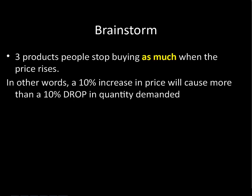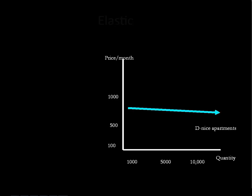Let's move on to the other type of demand. Brainstorm three products where people stop buying as much when the price rises — in other words, a 10% increase in price will cause more than a 10% drop in quantity demanded. Things like chicken, beef, Coca-Cola. Lots of products face this opposite problem, and this is called elastic demand.